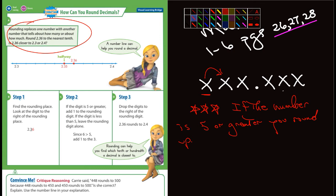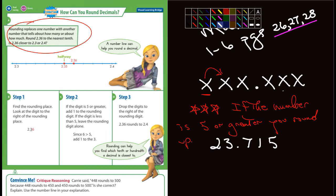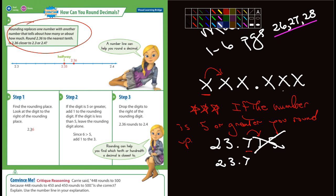Let me write down a number. Let's say 23.715, and we are going to round to the tenths place. What number do I look at? I look at the number immediately to the right, and it's a 1. Is that a five or greater? No, it's not, so it stays the same — the 7 doesn't change. So we would just write 23.7. We're rounding to the tenths place.